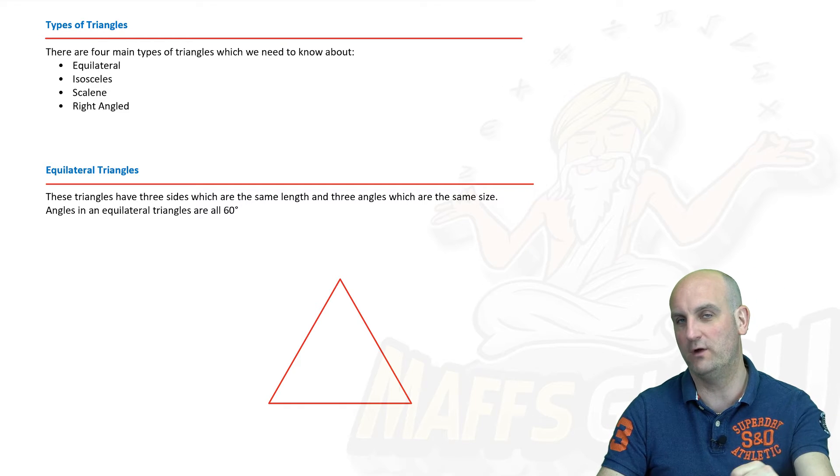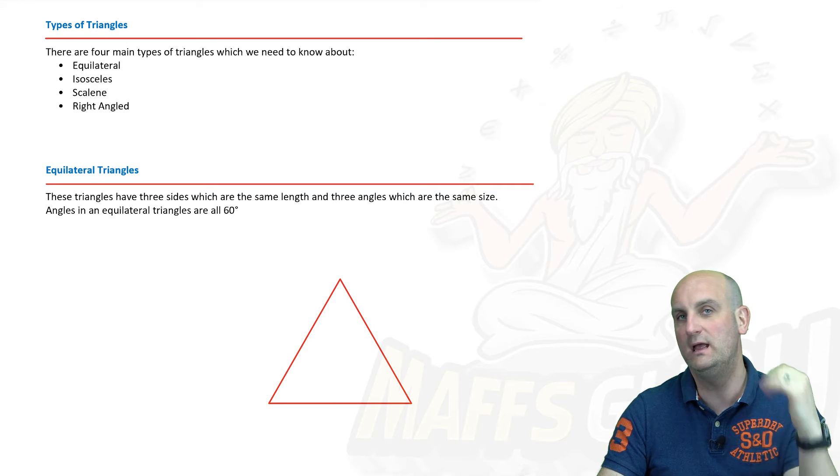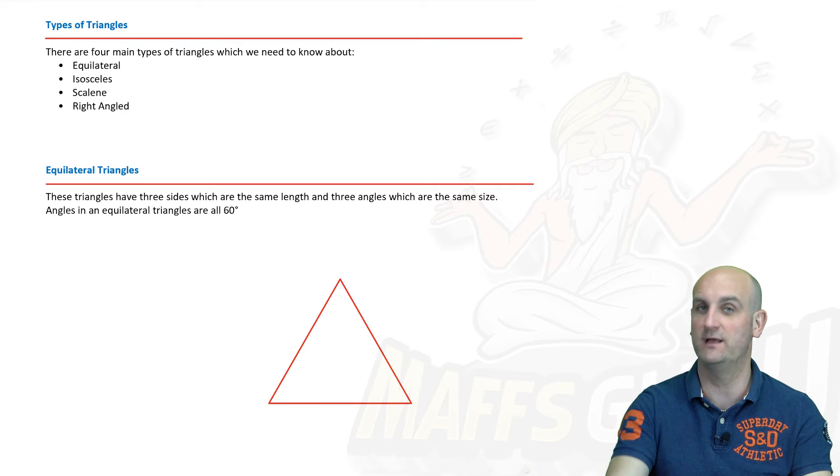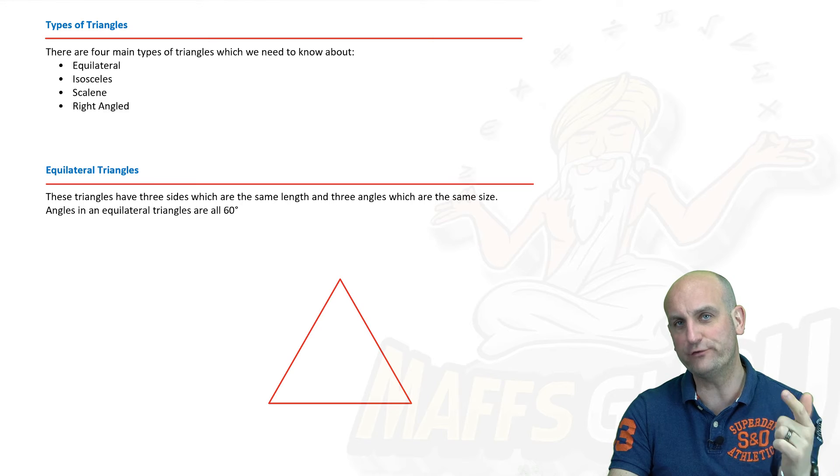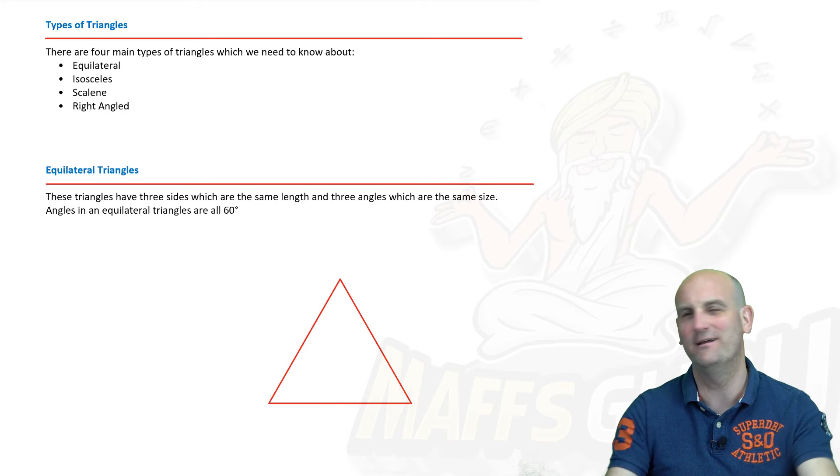Now, do you remember the four different types of triangles? Hopefully, you do, because they're right behind me on that screen. There are equilateral, as in the sides are all the same. There are isosceles, as in two of the sides are the same. Scalene, none of the sides are the same. And right-angled triangles, where the inside is right-angled.